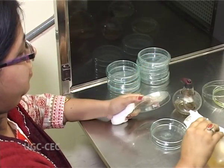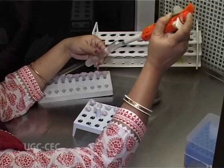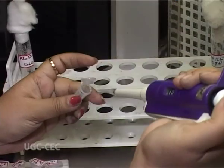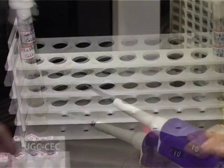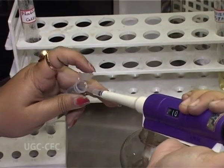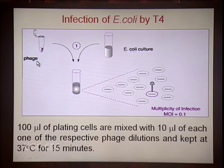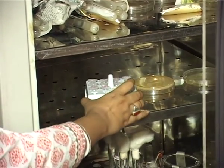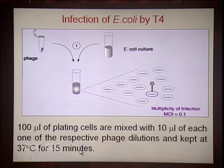In the meantime, prepare 10 tryptone hard agar plates and 10 sterile tubes labelled 10⁻¹ to 10⁻¹⁰. Now allow E. coli cells to be infected by T4 phage: take 100 µl of plating cells and 10 µl of different phage dilutions and mix them separately. After mixing, keep them at 37°C for 15 minutes — this time allows adsorption of the phage to the host and injection of its genome. Mix very gently; do not vortex, as vortexing will separate the phages from the host.